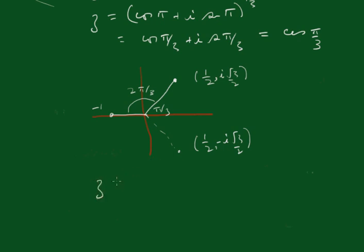The cos of minus pi upon 3 plus i sin of minus pi upon 3, and of course adding on this 2 pi upon 3, this one, that's simply going to make it the cos of pi plus i sin of pi.